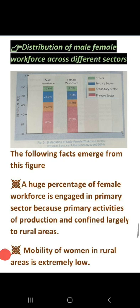Looking at the distribution of male-female workforce across different sectors: male workforce across the country is 45% in the primary sector and 19.1% in the secondary sector. For female workforce, 57.3% are engaged in the primary sector, 14.9% in secondary, 18.9% in tertiary, and others account for 9.6%. This shows that a huge proportion of female workforce is engaged in the primary sector, as there are many primary production activities available and the mobility of women in rural areas is extremely low.